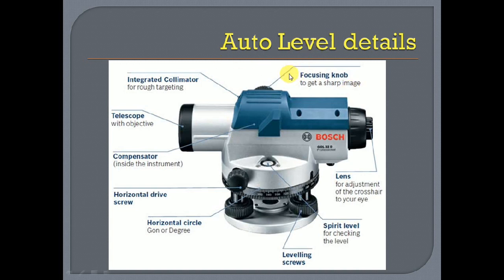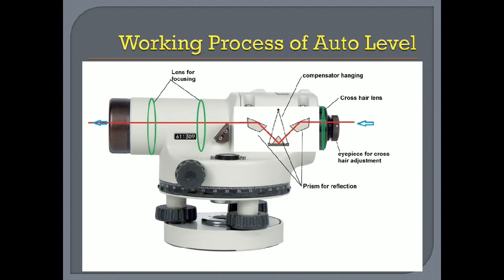Here are the auto level details: target, collimator, focusing, eyepiece for making crosshair. There is a spirit level, a screen level, and a horizontal circle showing angle readings from zero degrees to 360 degrees — in some auto levels a goals reading can also be seen. There is a horizontal drive for shifting the target left to right. Inside the auto level there is a compensator, which I will now describe.